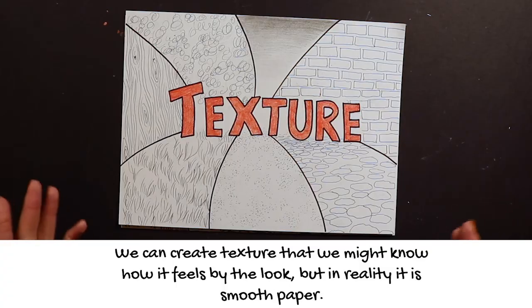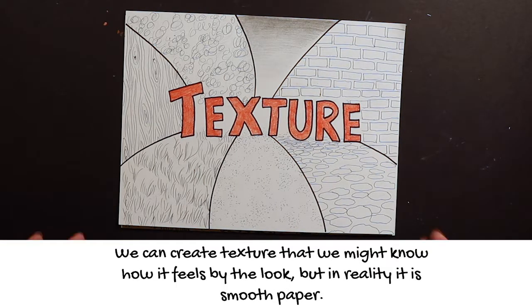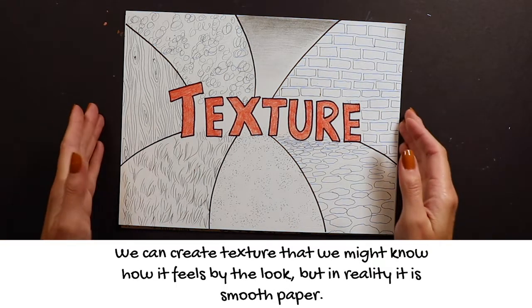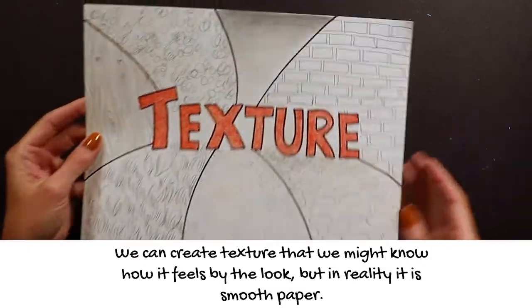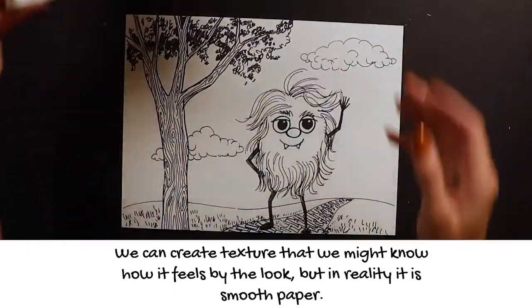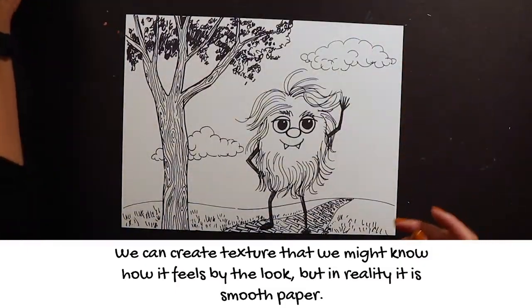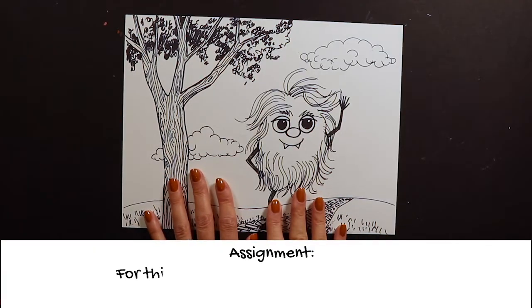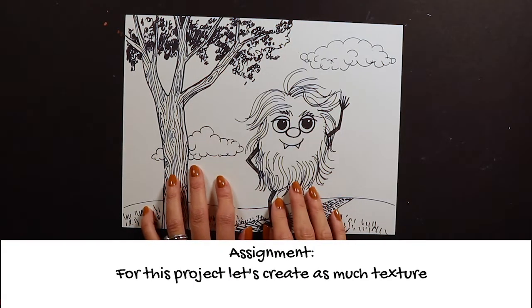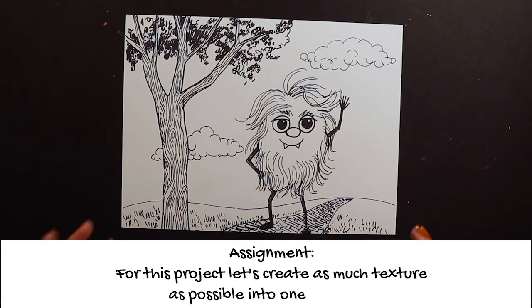A project I have for you: can you get a piece of paper and draw something using as many different kinds of implied texture as you can?